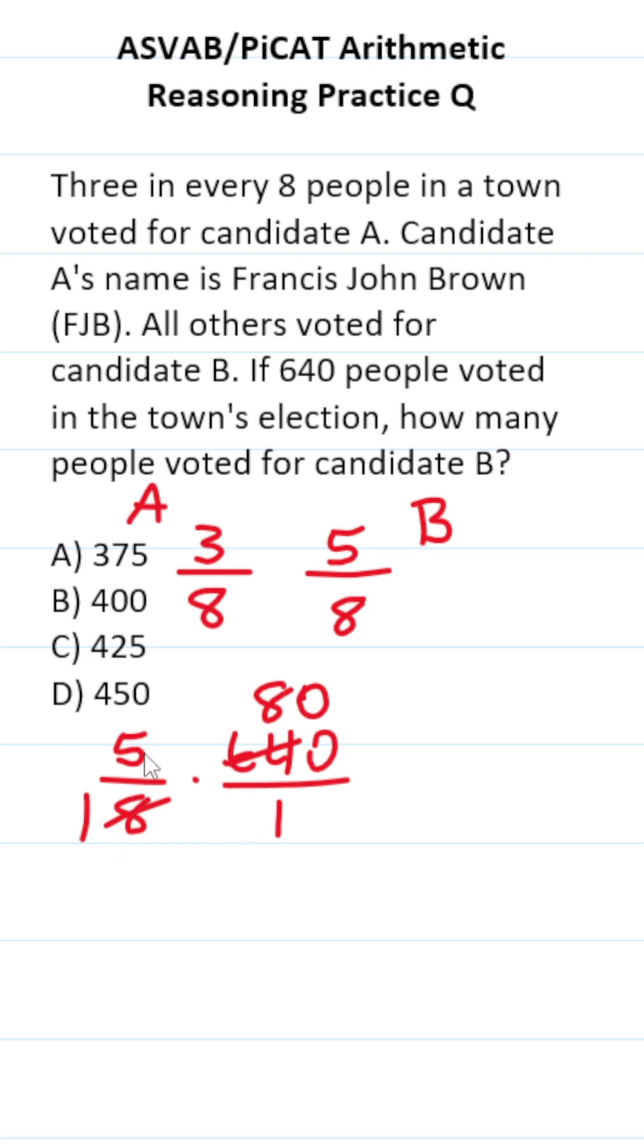Now we can just multiply this out. Five divided by one is five. Eighty divided by one is 80. Five times eight is 40.